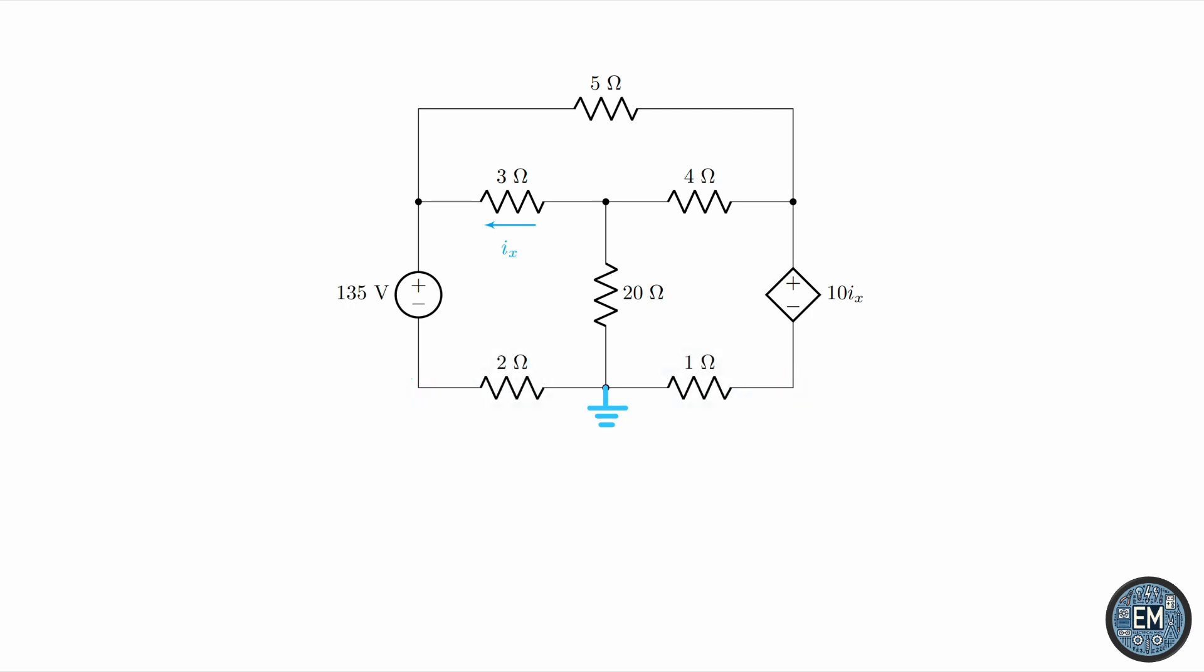Let's call this node over here VA, and this node over there VB. And then we'll call this middle node VC, this node VD, and this node VE.